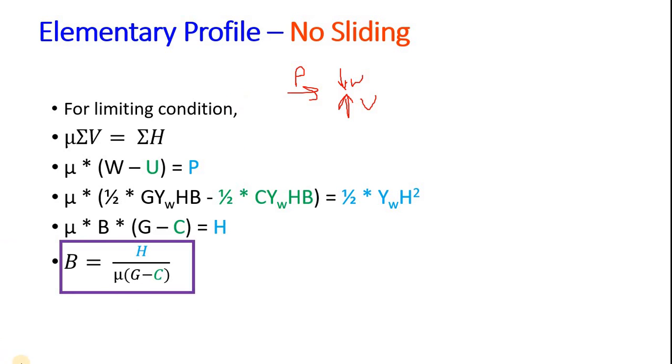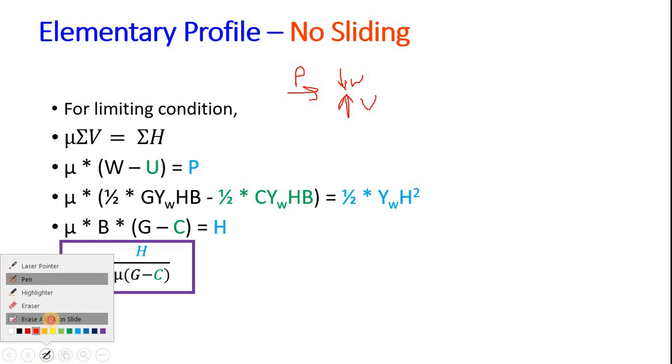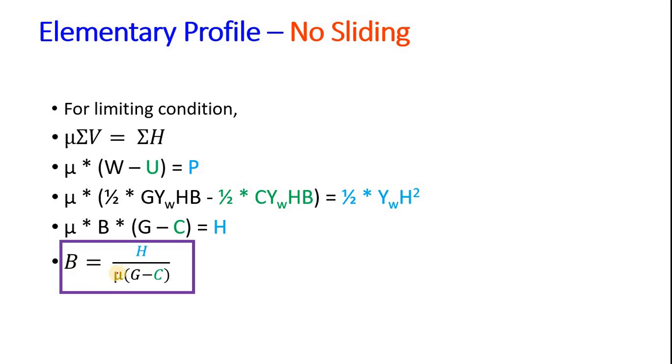Now again, when we substitute the value of P, W, and U, we will get again one relationship: B equals H divided by mu times G minus C. This is the second relationship. Now depending upon the value of C, we will get more relations.